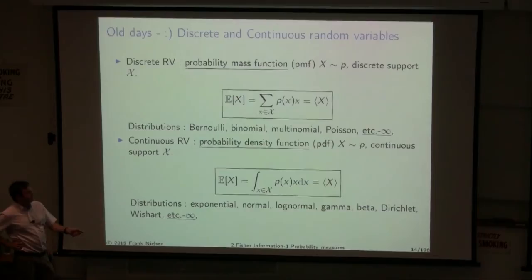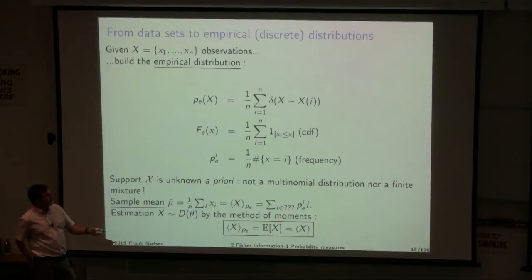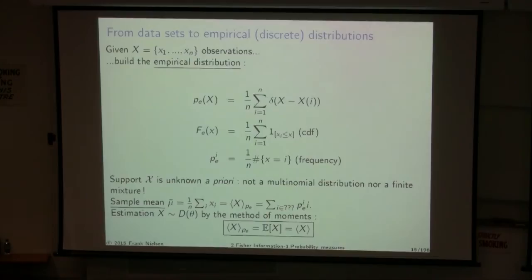When we have data, we can transform observations into an empirical distribution by counting frequencies. To estimate parameters, one method is the method of moments, where we match sample moments with the moments of the distribution. For describing entropy, there's a distinction between discrete random variables — Shannon entropy written as a sum — and continuous random variables, where we use differential entropy with an integral.